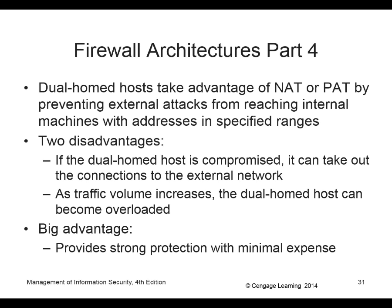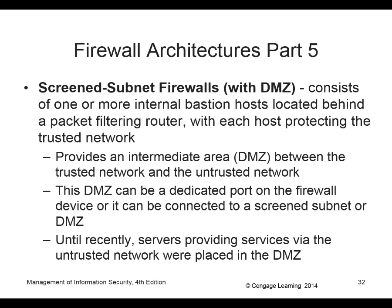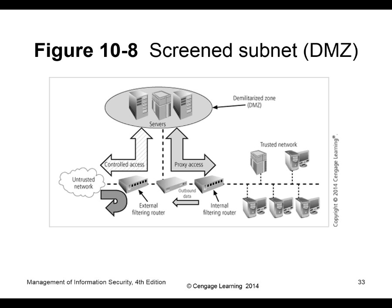A screened subnet firewall with DMZ has one or more internet-facing bastion hosts located behind a firewall, each protecting the trusted network. So we allow certain things through — maybe an email server, maybe a web server. It can be a dedicated port on the firewall or set up any way you want. Maybe we have the outside network on the left, allow certain things through like email and web servers, and then have another firewall going to the inside — so you really have to get through two firewalls to get in.